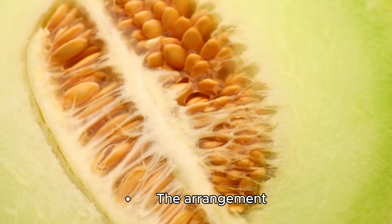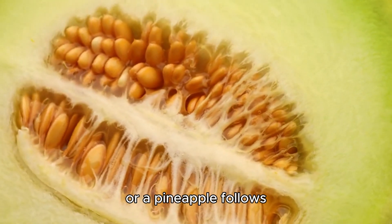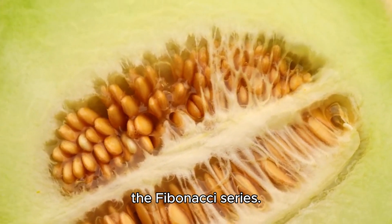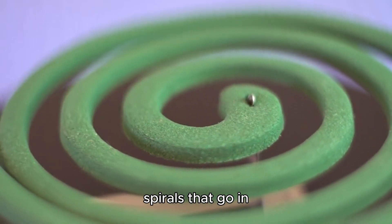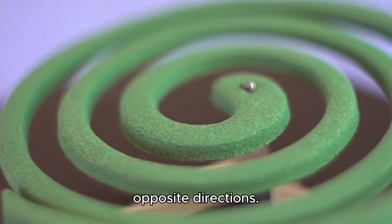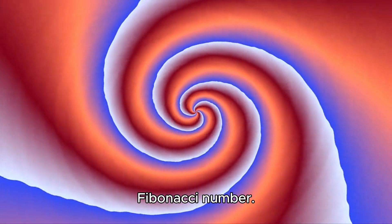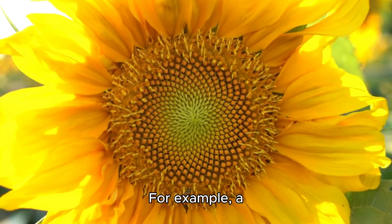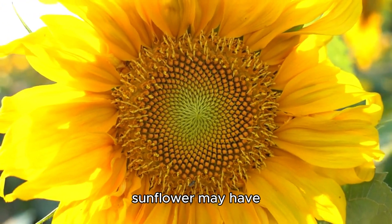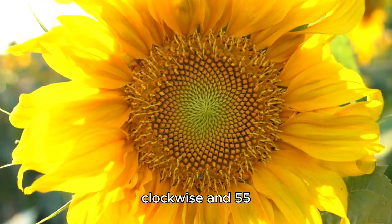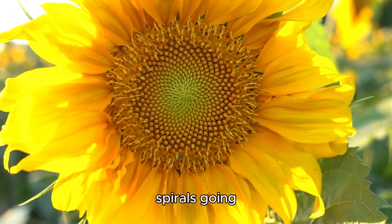The arrangement of seeds on a sunflower or a pineapple follows the Fibonacci series. The seeds form spirals that go in opposite directions. The number of spirals in each direction is a Fibonacci number. For example, a sunflower may have 34 spirals going clockwise and 55 spirals going counterclockwise.